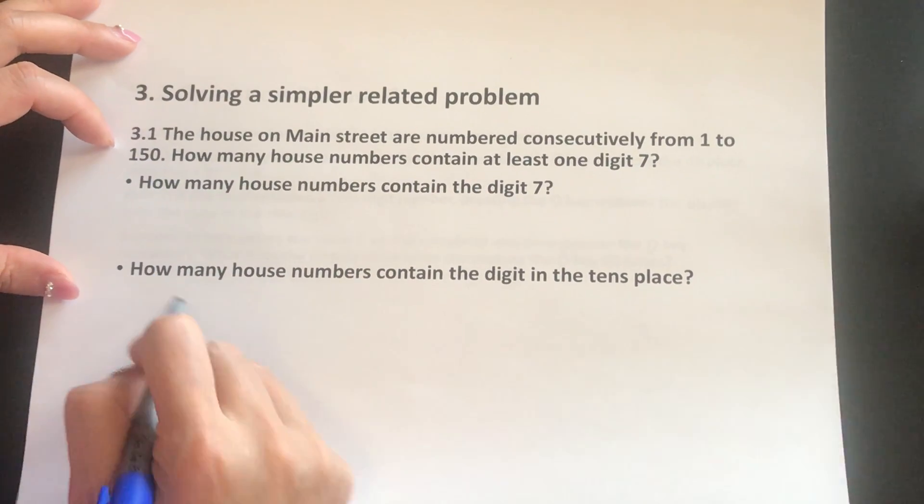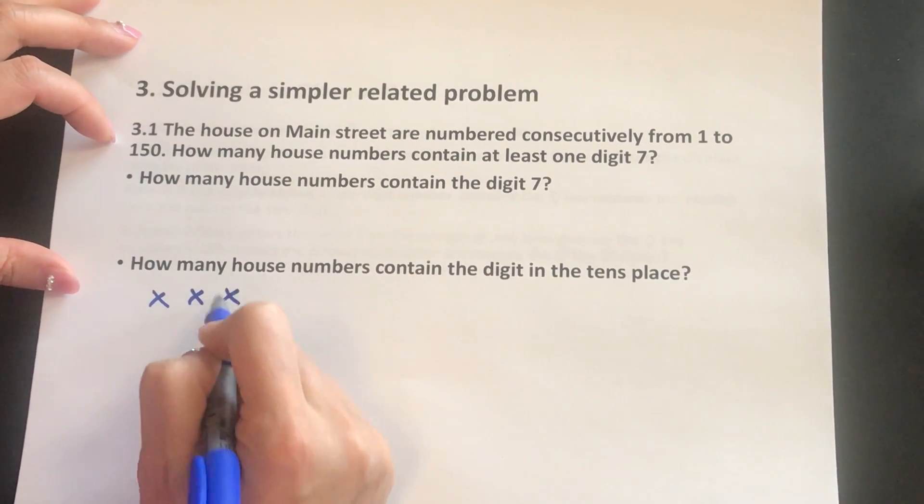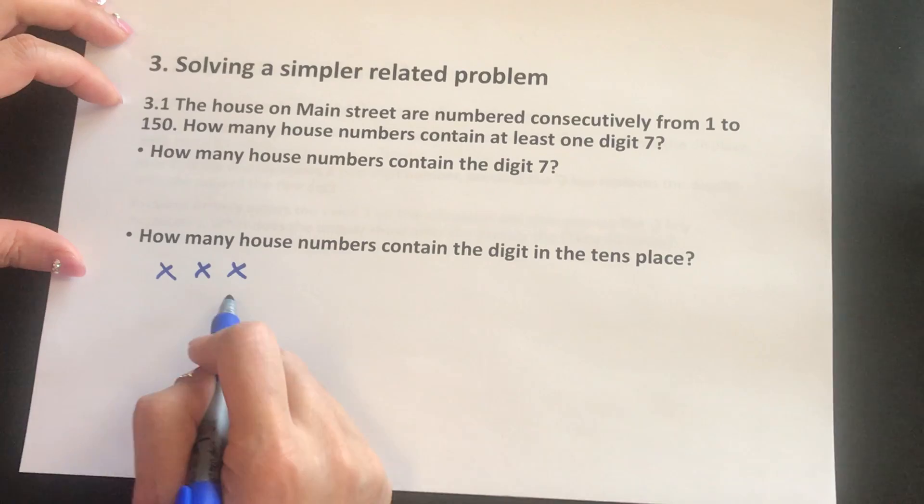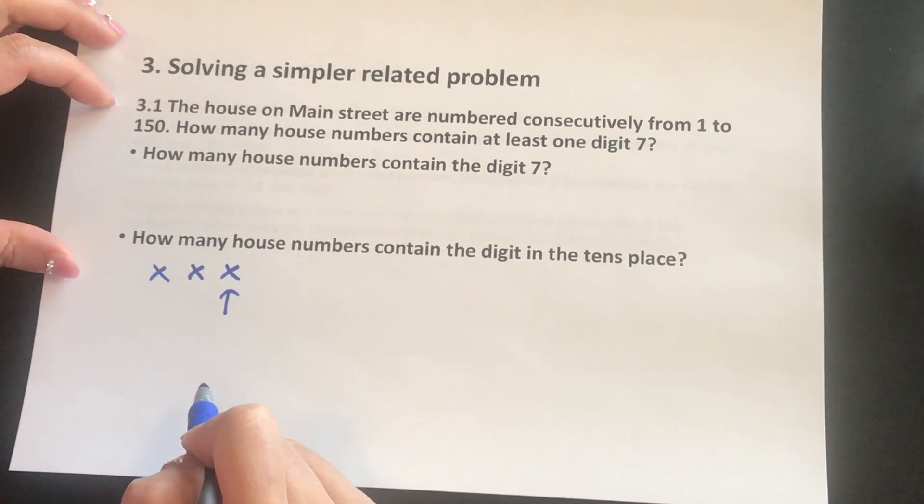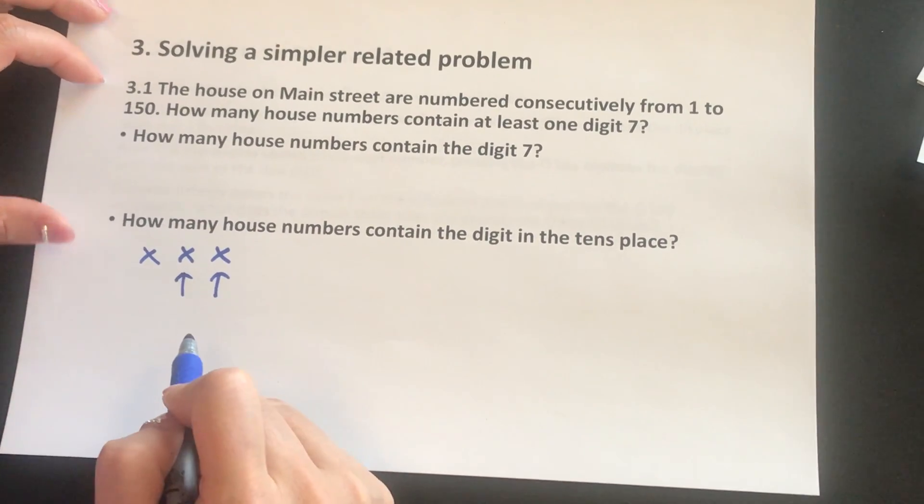So maximum number is 150, so we have a three-digit number. The 7 can either happen at the singles place or the tens place.